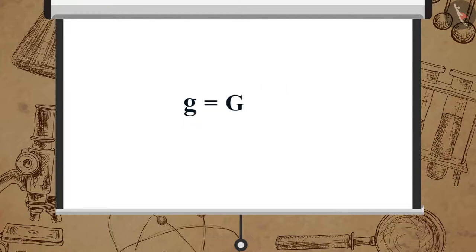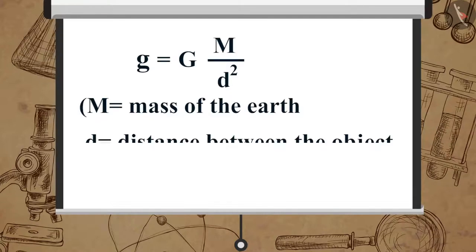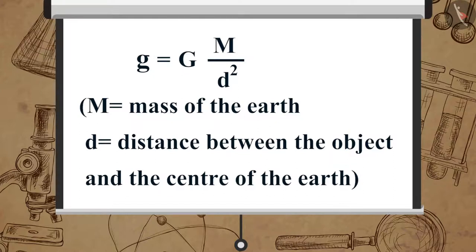Or, g is equal to G multiplied by M upon d square, where M is the mass of the Earth and d is the distance between the object and the center of the Earth.